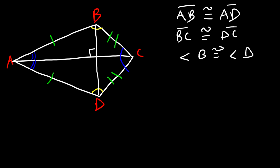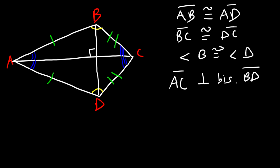AC also bisects angle C into two congruent angles. Note that angle A and angle C are not congruent to each other. AC is the perpendicular bisector of BD. If we call the intersection point E, then E is the midpoint of BD, which means BE is congruent to ED.